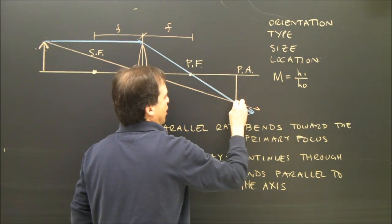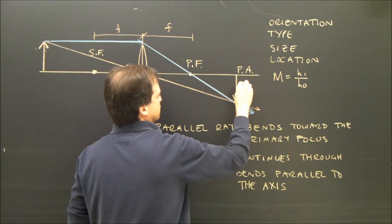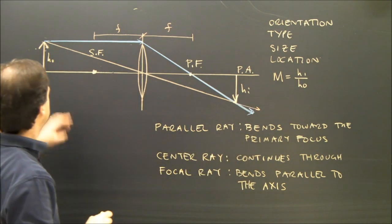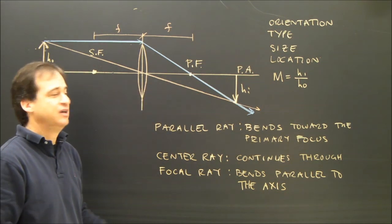And that's the top of the arrow, so there's my image. I'm going to label it height of image. This is the height of the object. And the image looks a little bit smaller, and it's inverted.